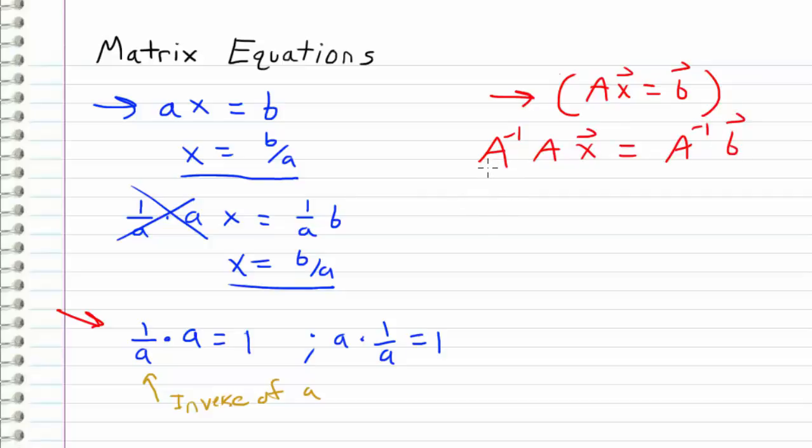And since we know that an inverse of a number times a number is one, well, it's the same idea with matrices. An inverse of a matrix times a matrix is equal to the one of matrix land, which we refer to as the identity matrix.